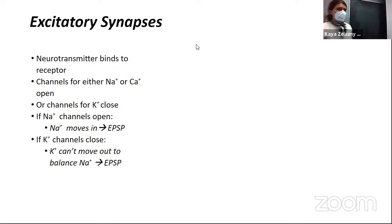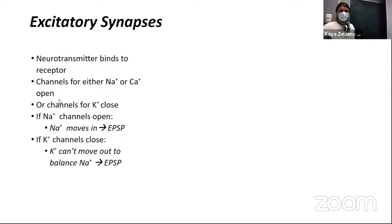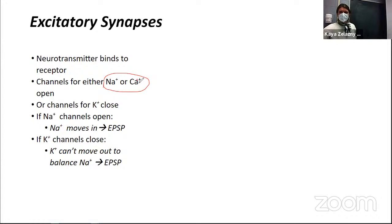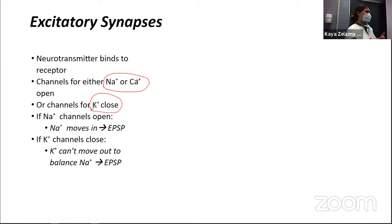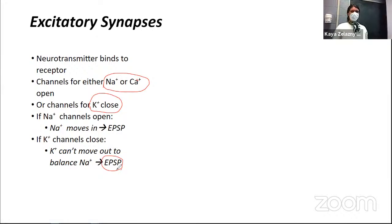In an excitatory synapse, a neurotransmitter binds to a receptor. Sodium and calcium want to flow into cells — they're positive ions — and that causes excitatory reactions. Or we could have a potassium channel close: potassium wants to leave cells, so if it stays in, it makes the cell more positive, which also results in an excitatory response.